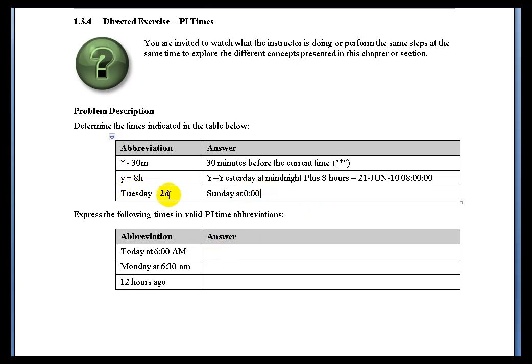Those are how you would convert the abbreviations. Now, to do today at 6 AM, the easiest way is just to do T plus 6H. We're using H for hours.